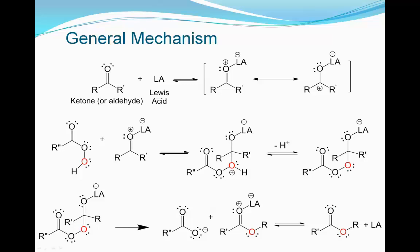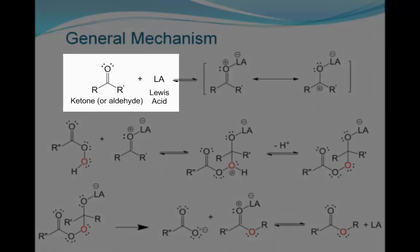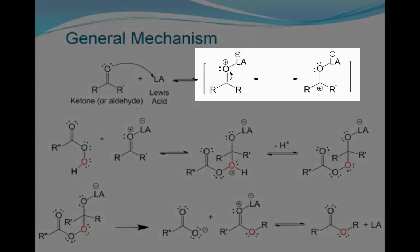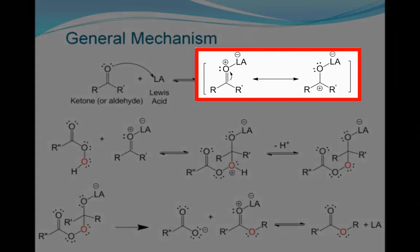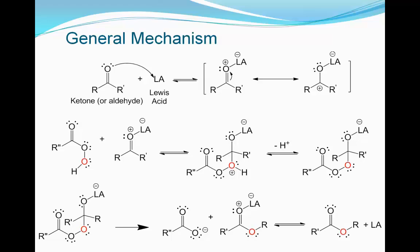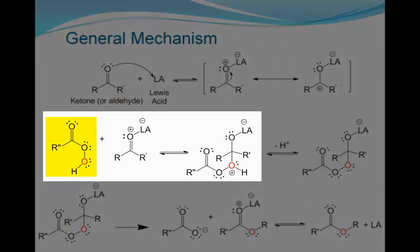Now let's look at the reaction mechanism. The reaction mechanism shows the step-by-step bond-breaking and bond-forming events that occur as starting materials are converted into products. The initial step involves a favorable associative interaction between the carbonyl oxygen and a Lewis acid, thus yielding an activated, resonance-stabilized complex wherein the carbonyl carbon is rendered electron-deficient. The peracid is sufficiently nucleophilic such that it is capable of attacking the electron-deficient carbonyl carbon in the activated intermediate.